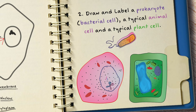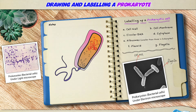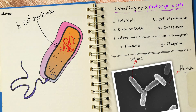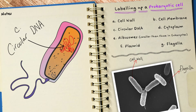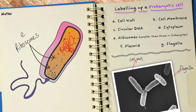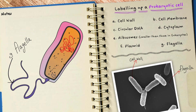We'll begin with the simplest, so let's draw and label a prokaryote. Here's my simple bacterial cell and if we label it we have: A, its cell wall; B, the cell membrane; C, some circular DNA; D, the cytoplasm; E, the ribosomes; F, a plasmid; and G, the flagella.